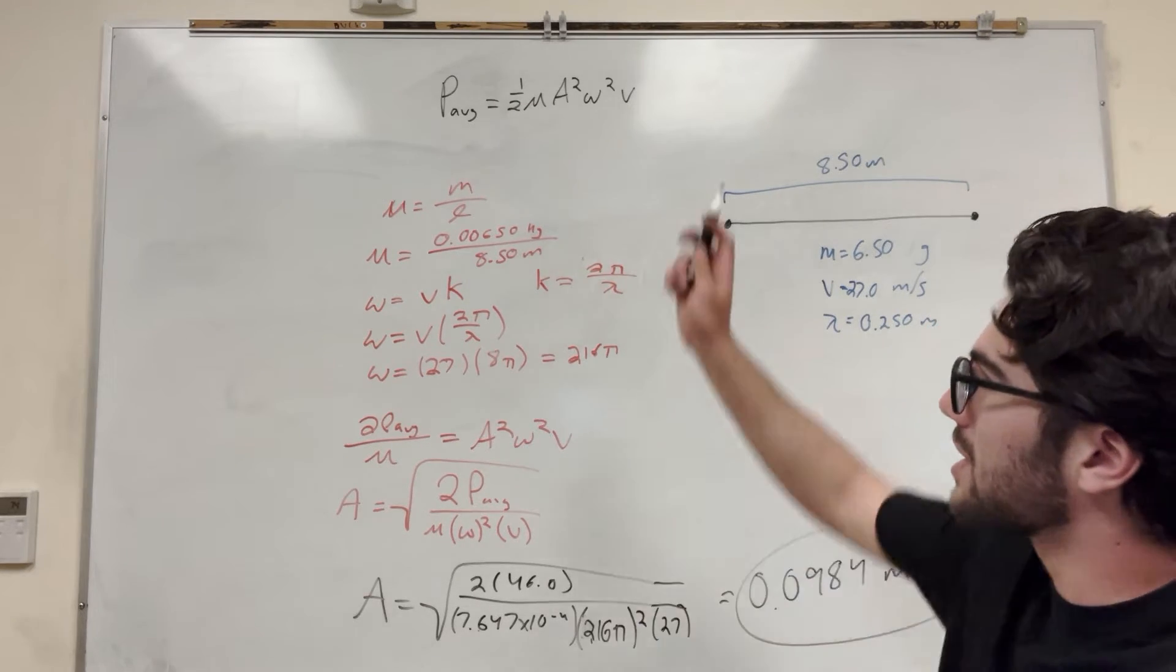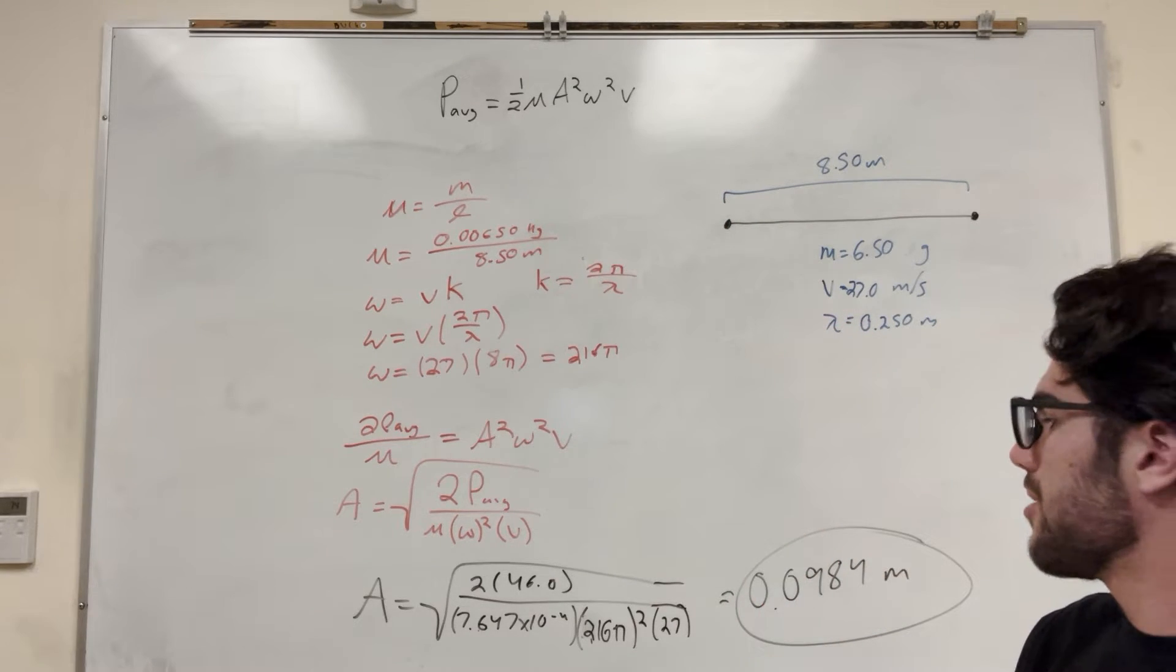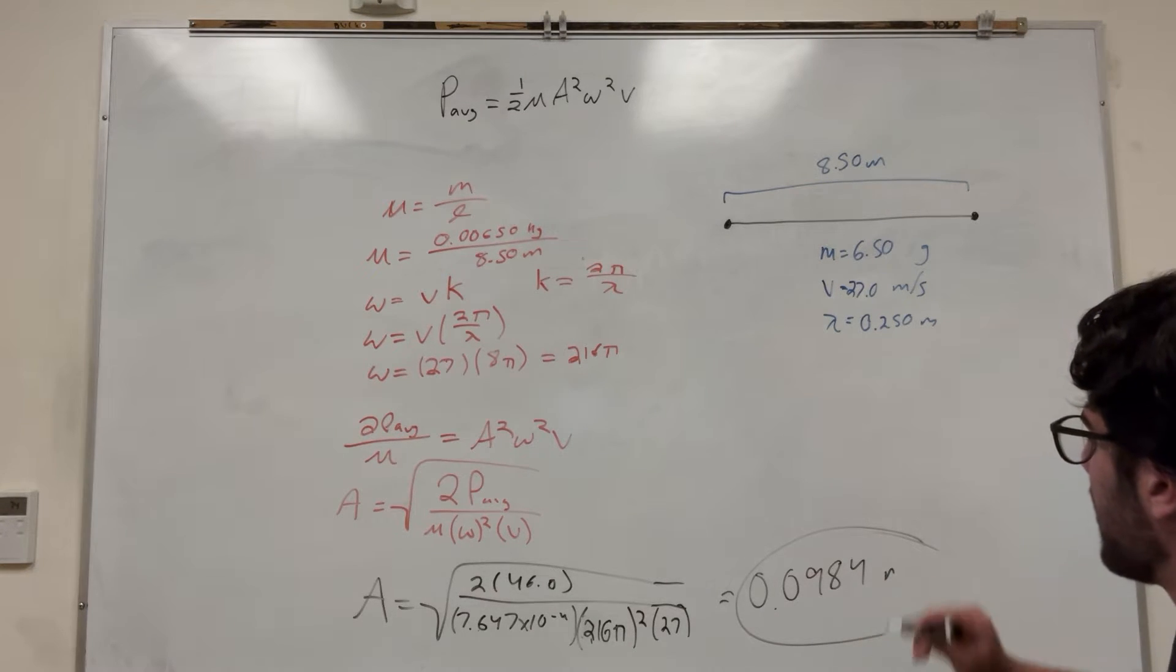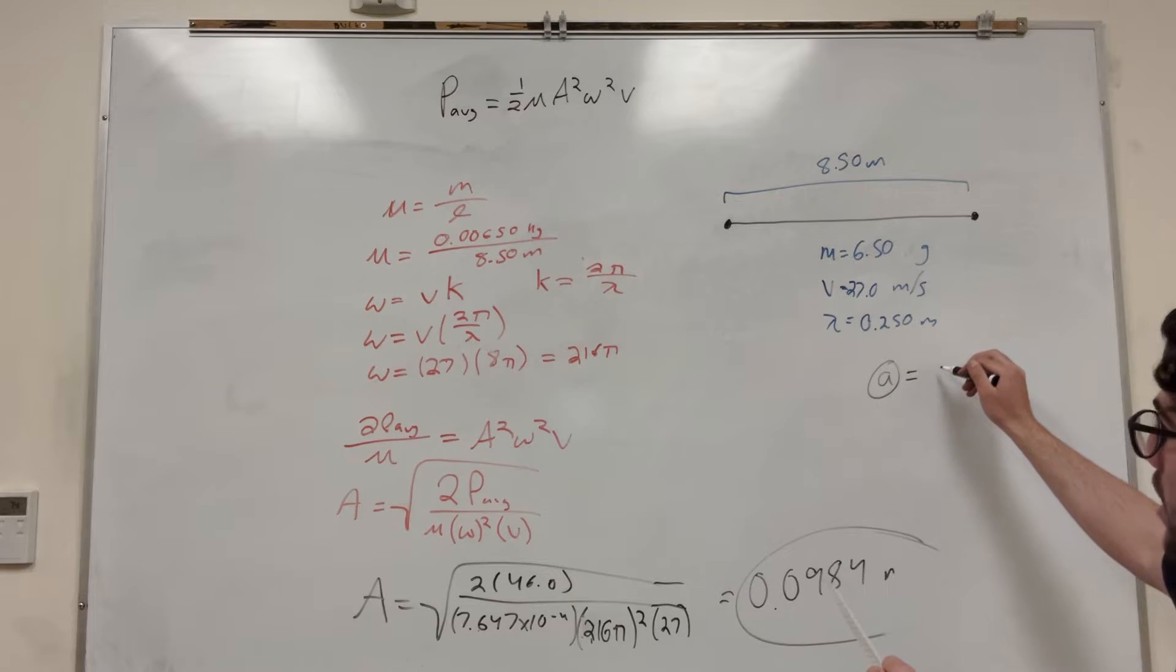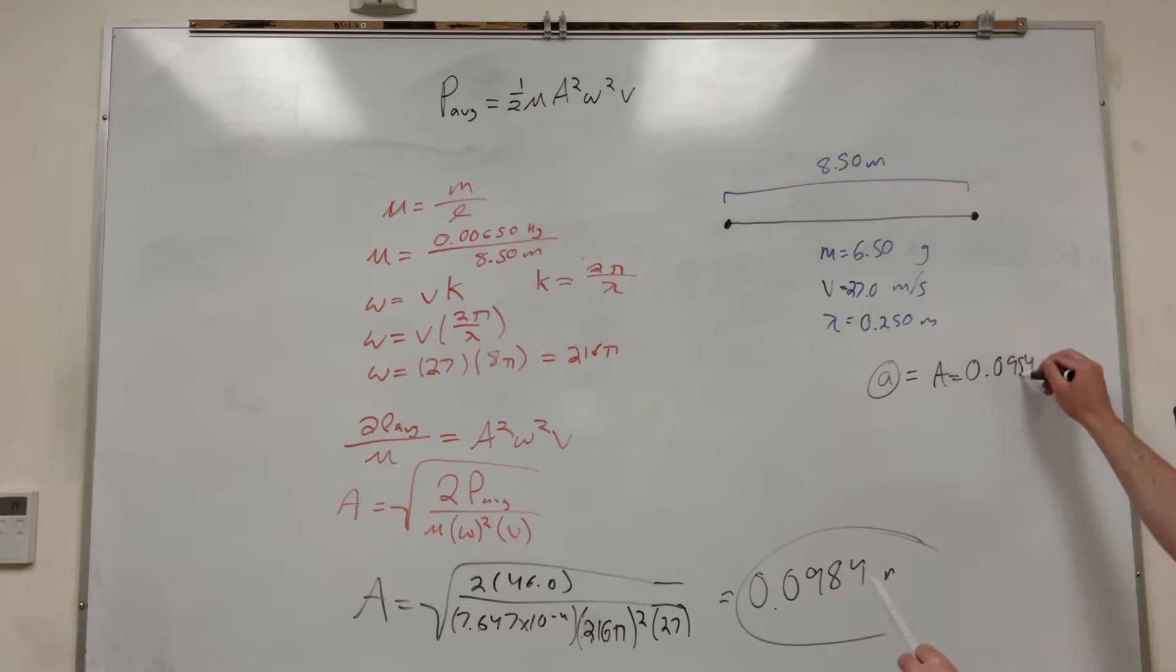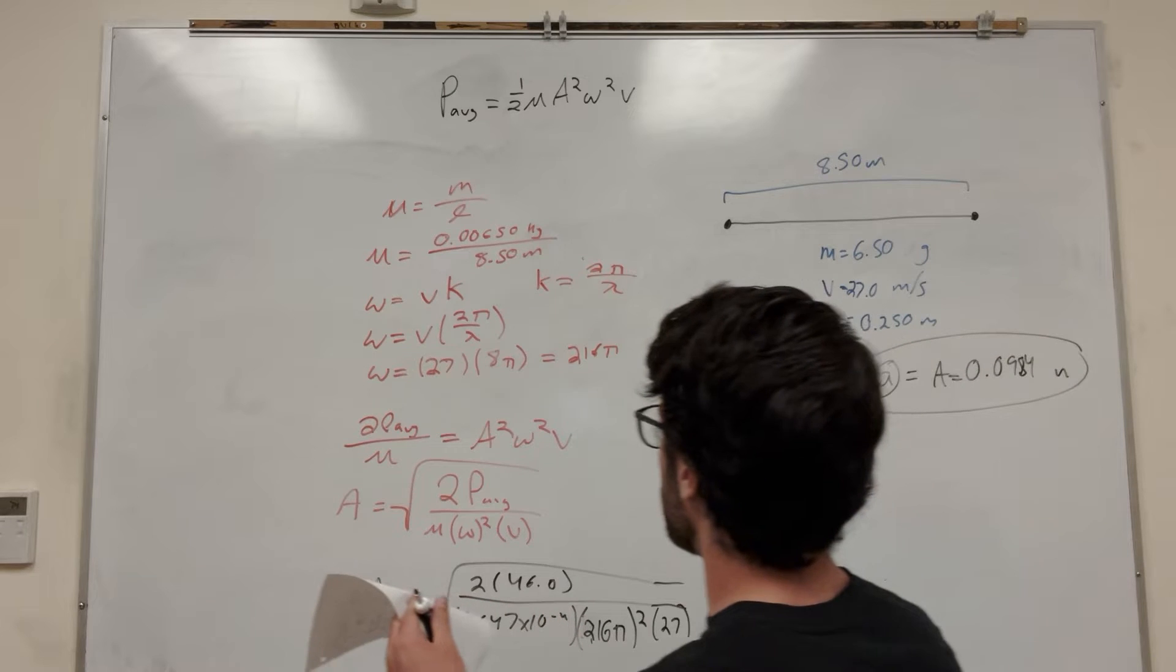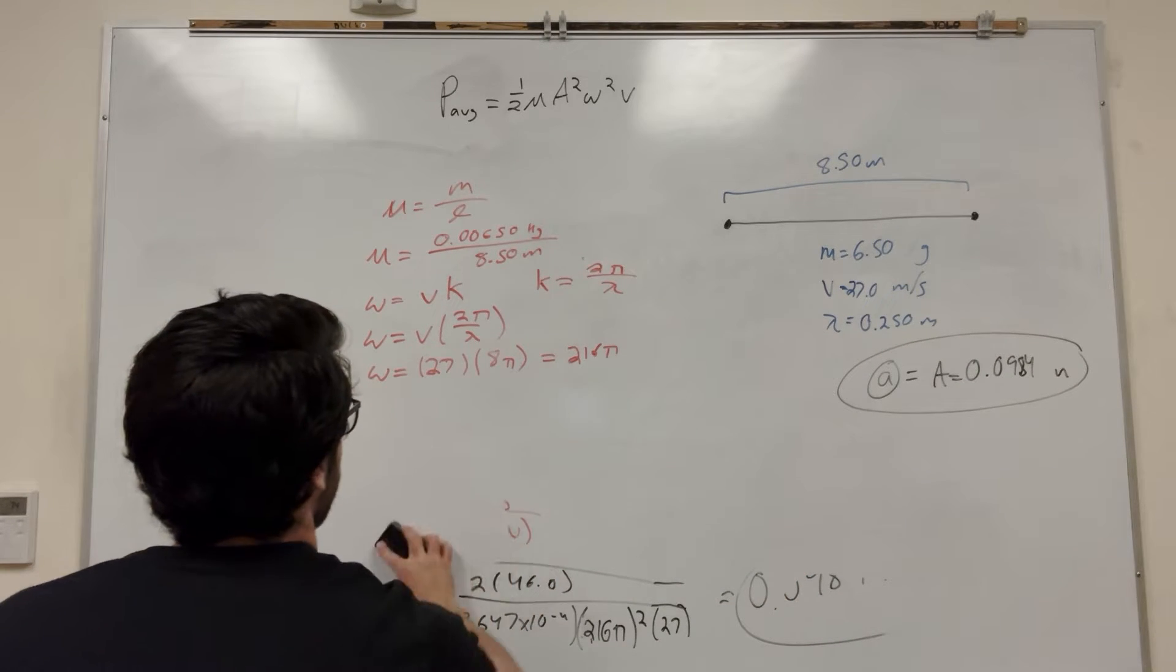So basically we're going to use the same equation, but instead our wave speed is going to be doubled, and our wave speed is just velocity. So where am I going to use it? I should probably write this down. So A is equal to 0.0984 meters. So this might be a useful number. Let's go ahead and erase up to this part.